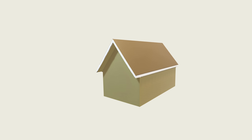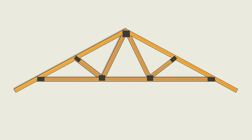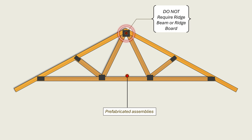It is important to clarify that gable roofs and hip roofs are not exclusively framed with rafters and ridge boards or ridge beams. Manufactured trusses can replicate the same gable or hip forms without requiring either member. Trusses are prefabricated assemblies designed to transfer loads directly to the exterior walls, and their ridge lines do not require ridge beams or ridge boards. Therefore, our discussion excludes roofs that are framed with manufactured trusses.